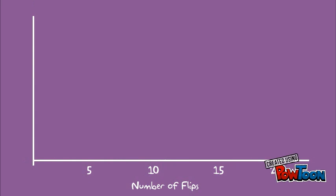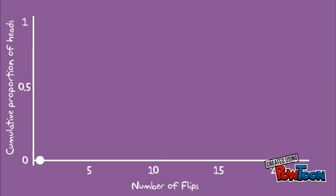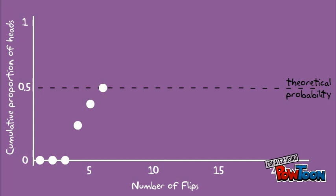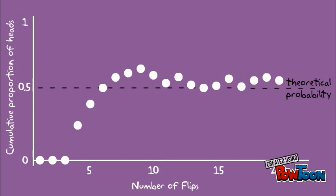I just flipped a coin 20 times and these are the results. After each flip, we'll calculate the cumulative proportion of heads so far. The first flip is tails, so our current proportion is 0 heads out of 1 flip, 0%. The second flip is also tails, so now it's 0 heads out of 2 flips, still 0% heads. Next flip is tails again, 0%. Then heads — now we have 1 heads out of 4 flips, 25% heads. Flip again and it's 40%. Heads again and we finally hit our theoretical probability of 50% for the first time. This graph shows the observed probability approaching the theoretical probability.